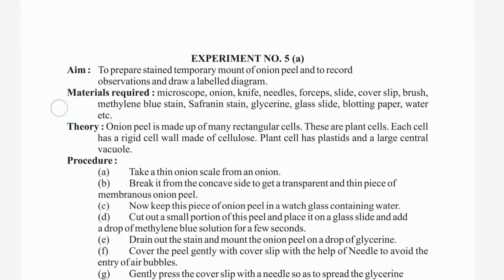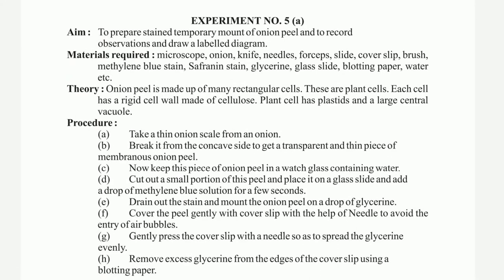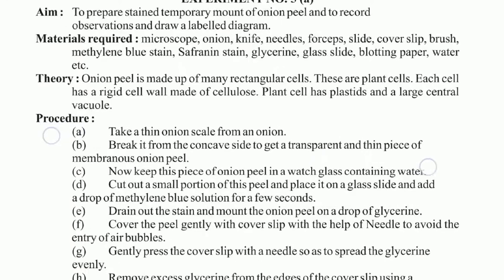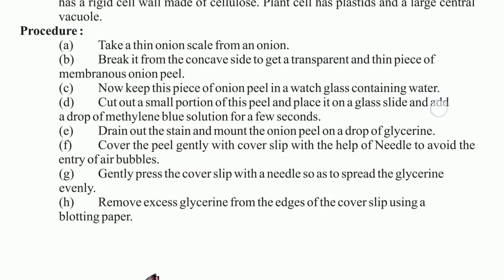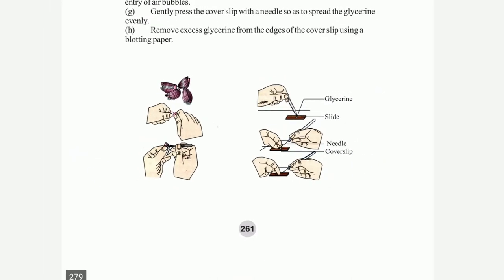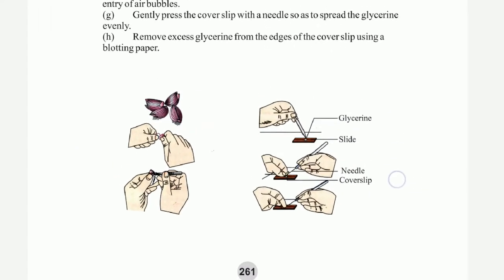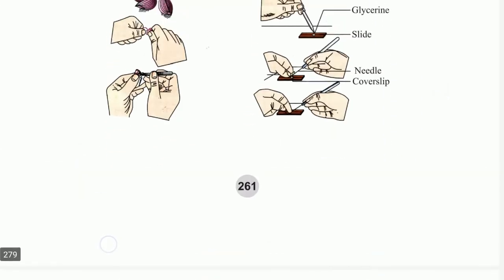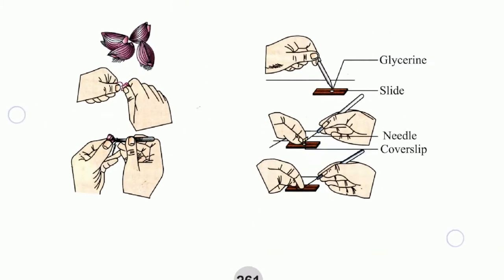Experiment number 5: to prepare a temporary mount of onion peel, record observations, and draw a labelled diagram. Material required, theory, and procedure are shown, followed by the diagram.